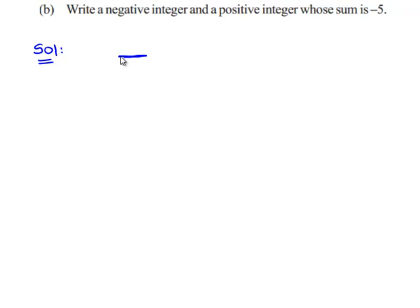We'll write it as the sum of a negative integer and a positive integer gives -5.